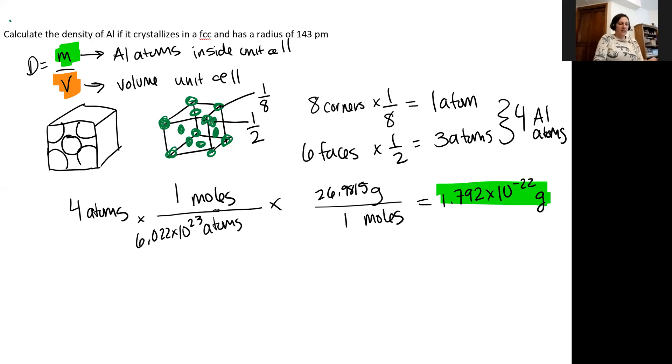And since we're looking at a face centered cubic, I know that we have, it's based on a cubic arrangement. So my length and my height and my width are all going to be the same value, A, A, and A. So I can't determine though what that distance is in terms of the radius of the aluminum atom on the bottom.